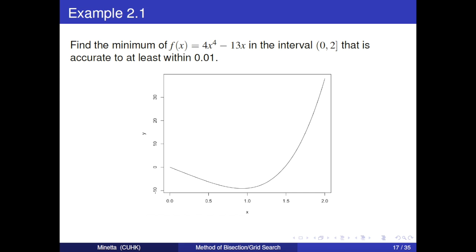We use an example to explain it. For the function f(x), find the minimum in the interval [0, 2] that is accurate to at least within 0.01. Similarly, we plot it first.